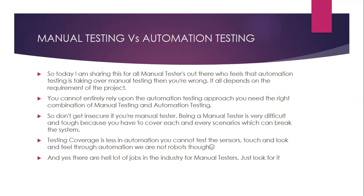For automation testing, you would be using tools. For example, if you are testing a web application you might use Selenium; if you are testing a mobile application you might use Appium. If you want to automate robotic process automation, you might use an RPA tool, which can also handle desktop, web, or both kinds of applications. Automation has variety based on tools, technology, and the application you want to automate.